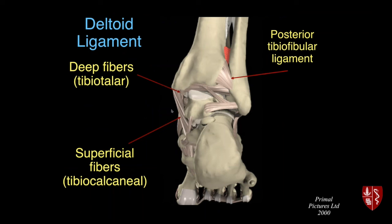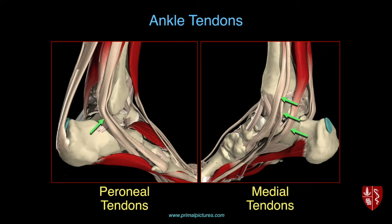A smaller ligament called the calcaneofibular ligament comes from the fibula down to the calcaneus and is a little tricky to see — we'll look carefully for that on the scans. Then there's the posterior talofibular ligament. So laterally there are three main ligaments: ATF, calcaneofibular, and posterior talofibular ligament.